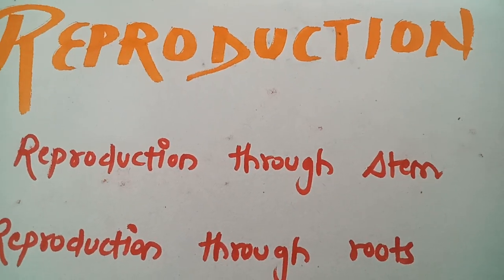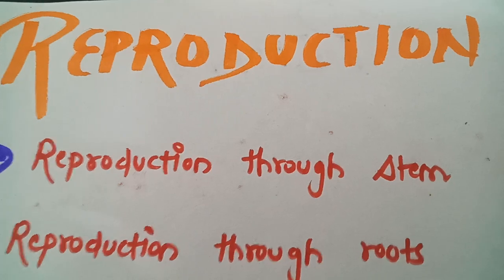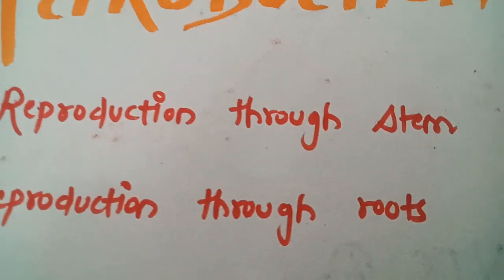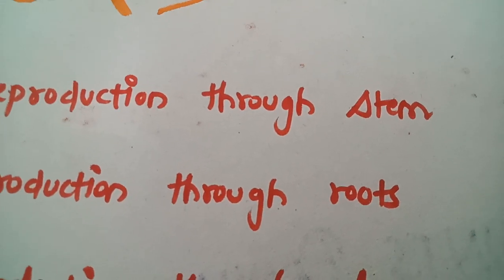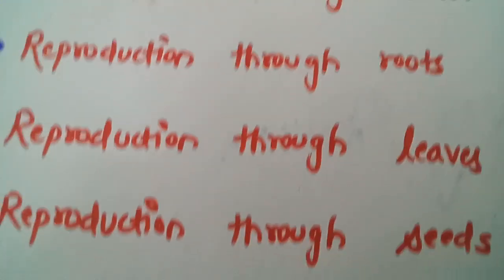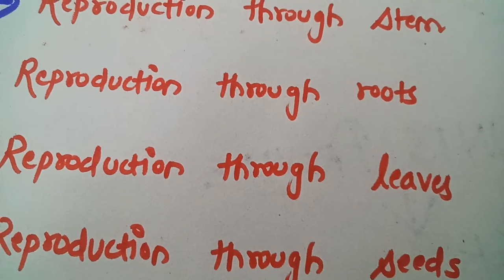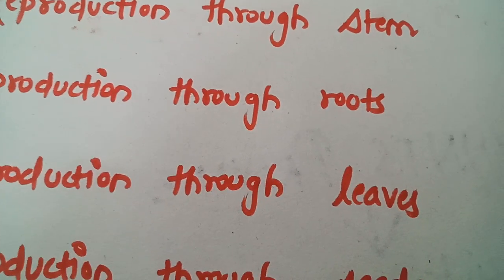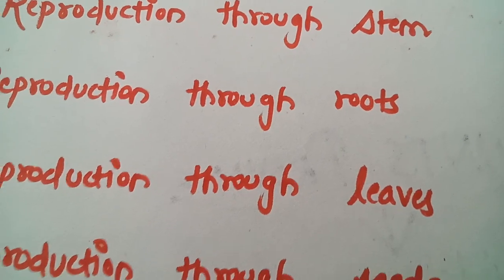For example rose plant or a potato. Now roots. When a plant reproduce with the help of its roots. For example carrots or turnips. Reproduction through leaves. When a plant reproduce with the help of the leaves. For example bryophyllum.